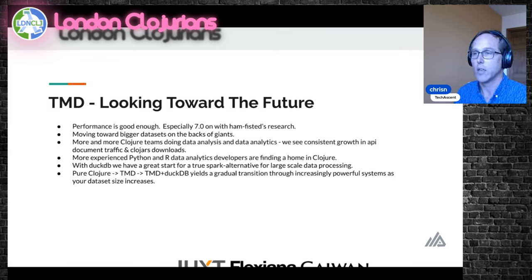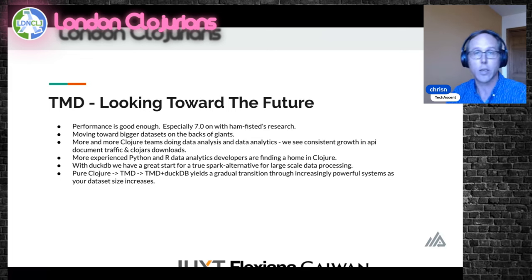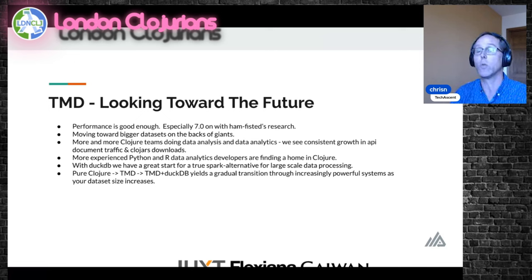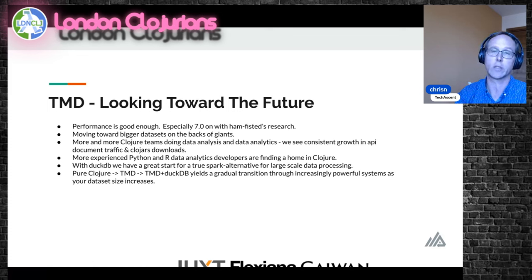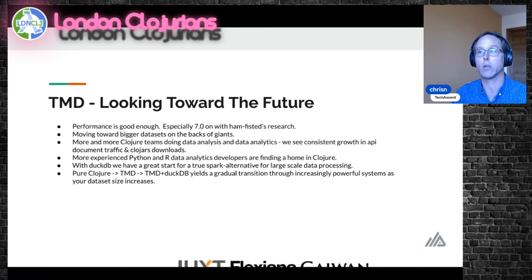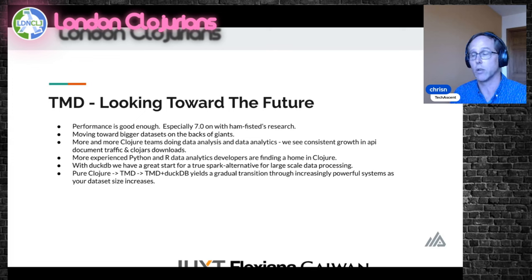I was on Slack earlier this week where somebody wanted a shuffle that took a seed — that exists in TMD and in hamfisted. All of their time is spent in SparkQL anyway, so TMD is 5% of the runtime and it's fine. I'll tell you that DuckDB can load Parquet and CSV files over S3, so if you have your dataset already set up on S3, give DuckDB a try. I think there's a solid progression from pure Clojure to TMD to TMD-and-DuckDB, and that gives you a nice progression between increasingly powerful systems as your dataset size increases.